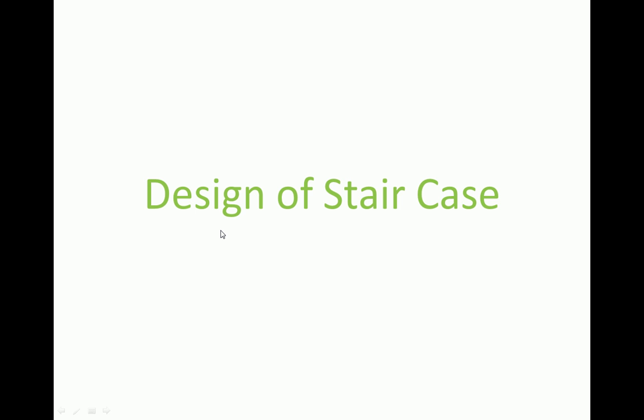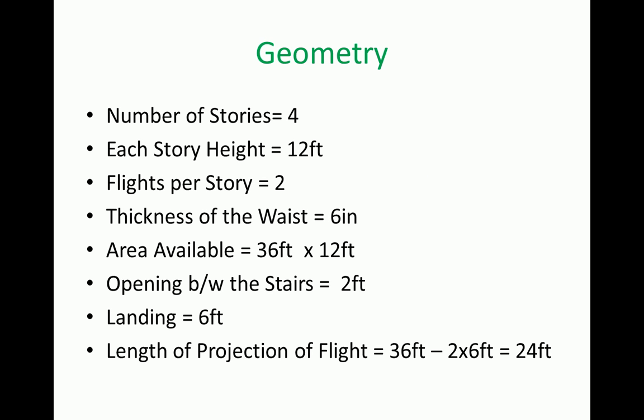Design of a staircase. We are going to show the geometries of the staircase. The parameters include the number of stories, which are four, and each story height is 12 feet. There are two flights per story, each 12 feet in length. The slab thickness is six inches, and the available area is six feet by 12 feet.